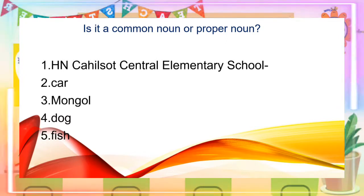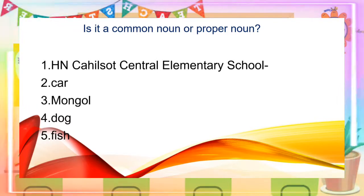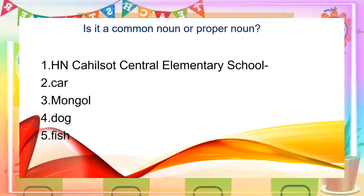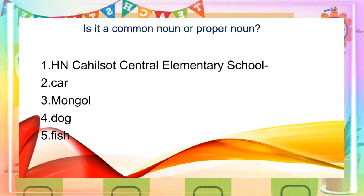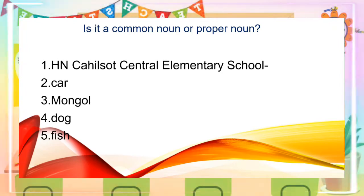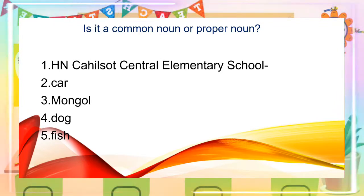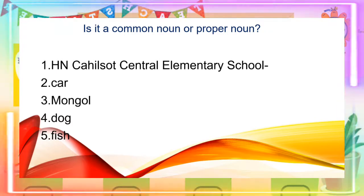You are going to identify the nouns if they are a common noun or a proper noun. For number 1: H.N. Kahilso Central Elementary School. Number 2: car. For number 3: Mongol. Number 2 is a common noun — car. Number 3, Mongol, it is a proper noun. For dog — very good, it is a common noun. Number 5, fish — very good, it is a common noun.